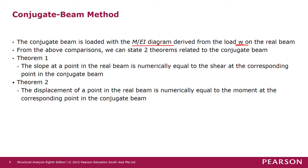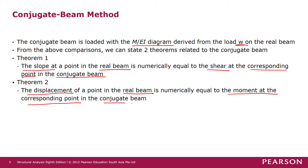From these comparisons we can state two theorems. Theorem one: the slope at a point in the real beam is numerically equal to the shear at the corresponding point in the conjugate beam. Theorem two: the displacement of a point in the real beam is numerically equal to the moment at the corresponding point in the conjugate beam.